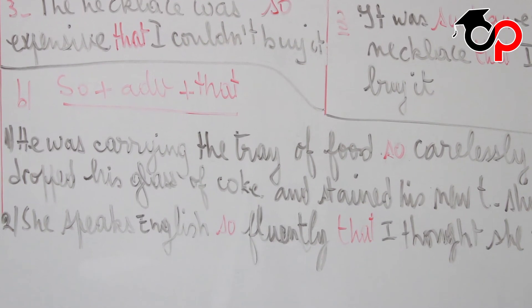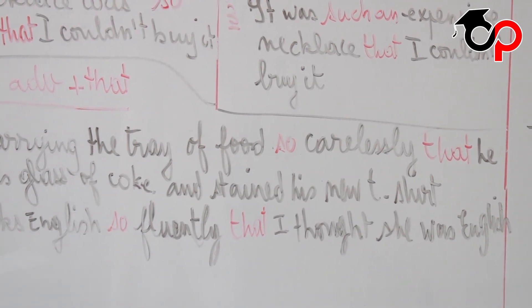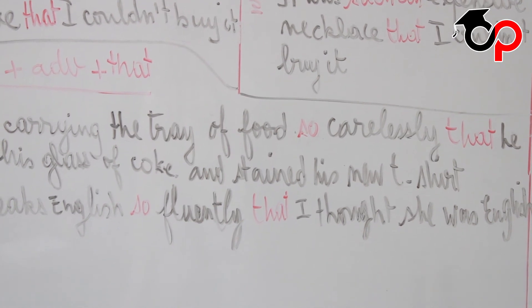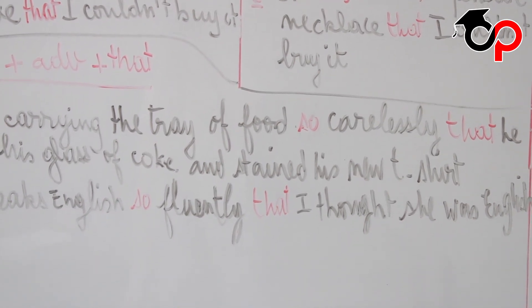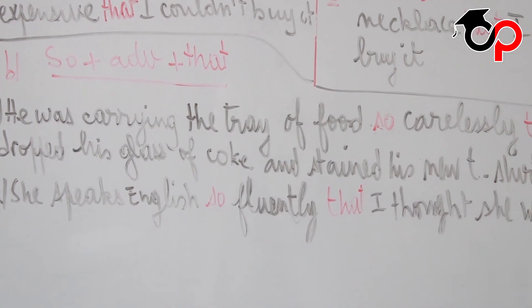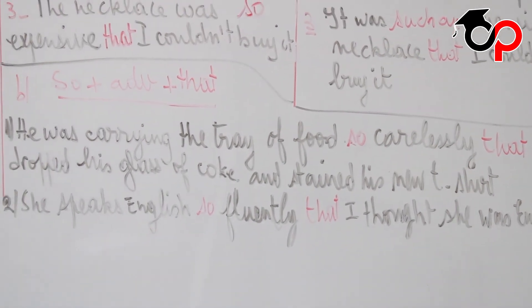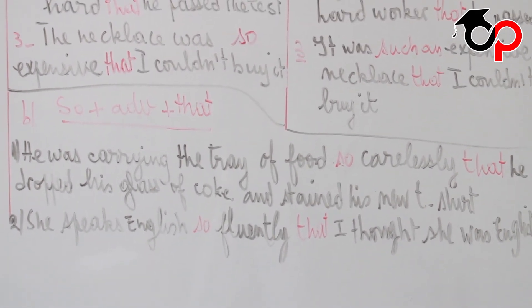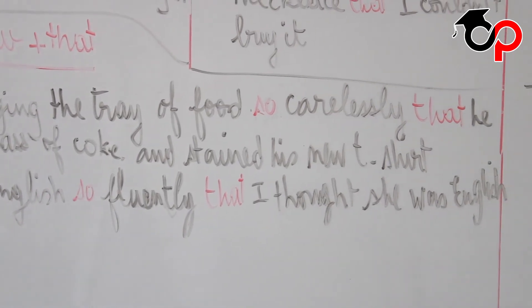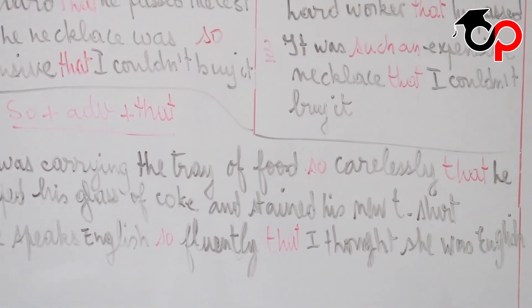Example 1: he was carrying the tray of food so carelessly that he dropped his glass of Coke and stained his new t-shirt. Carelessly is an adverb — we form adverbs from adjectives by adding -ly, though there are some exceptions. Example 2: she speaks English so fluently that I thought she was English — or so perfectly that I thought she was really an English person.